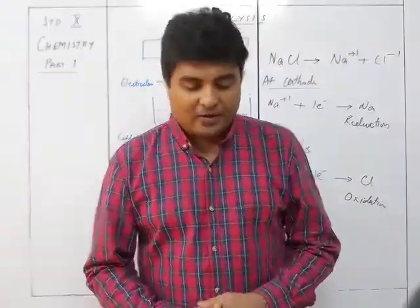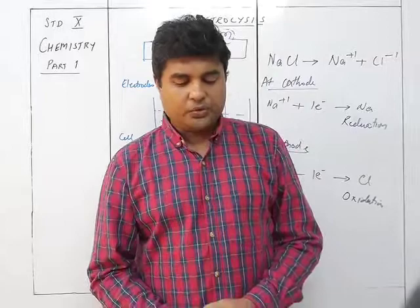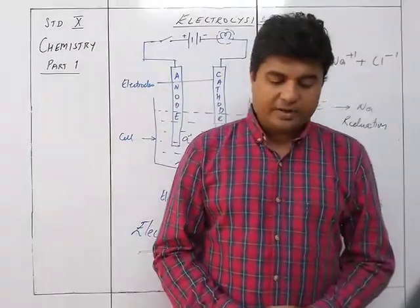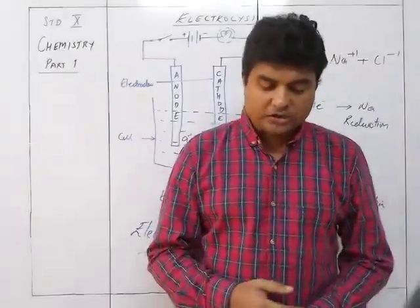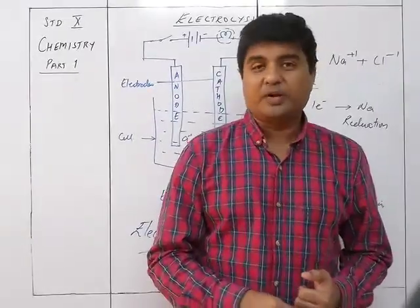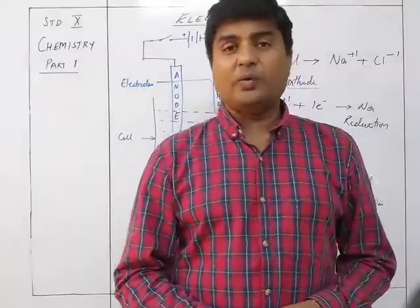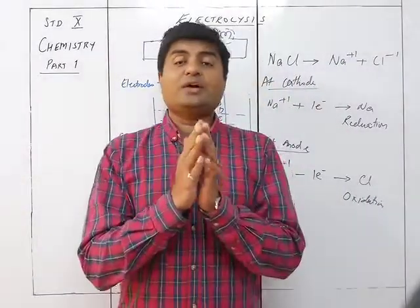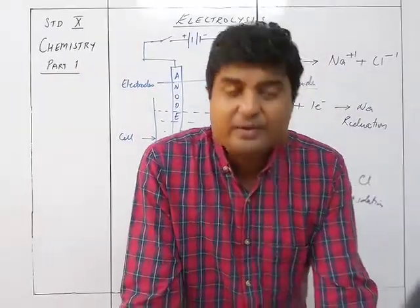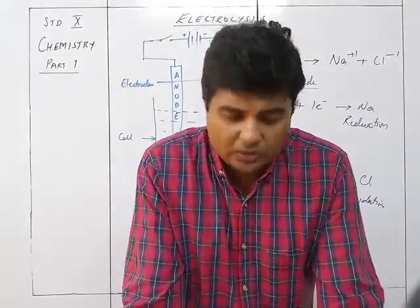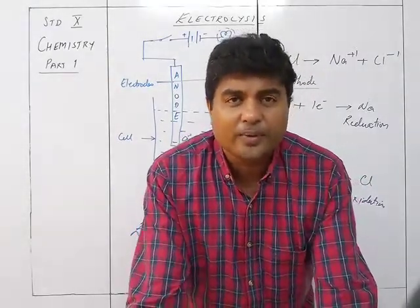Now we differentiate between electrolyte and non-electrolyte. A chemical compound which conducts electricity in a fused or aqueous solution state and undergoes chemical decomposition due to the flow of current through it is called an electrolyte. Electrolytes are always ionic compounds. They already have ions, and the particles of a strong electrolyte are only ions, whereas a weak electrolyte has ions plus some molecules.